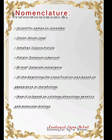Scientific names to remember: onion is Allium cepa, Amaltas is Cassia fistula, potato is Solanum tuberosum, and brinjal is Solanum melongena. At the beginning, classification was based on appearance or morphology — how organisms look. Now it is based on cytology, physiology, genetics and molecular biology, which is the modern approach of classification. Please remember all these facts and scientific names.